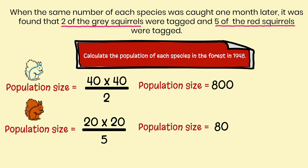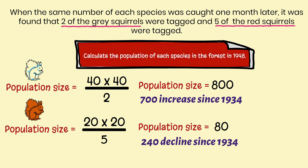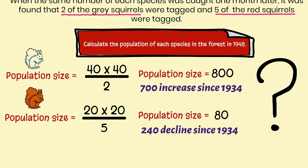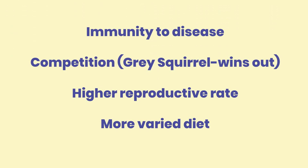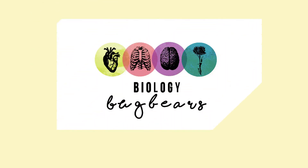It's very interesting to look back at 1934. The grey squirrels have increased dramatically — 700 more since 1934 — but the red squirrels have declined greatly, with 240 less. Why? Possibly the grey squirrels have better immunity, so they're more immune to disease. They're better at competing, they have a higher reproductive rate, and they probably eat a more varied diet. So capture-recapture is very important — the very best of luck.